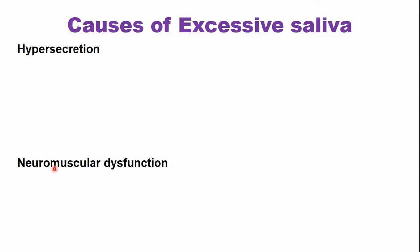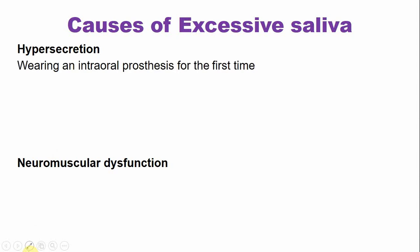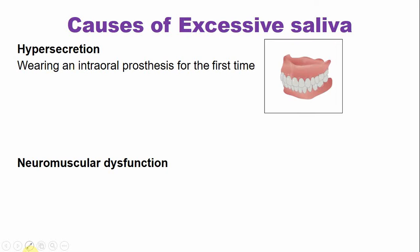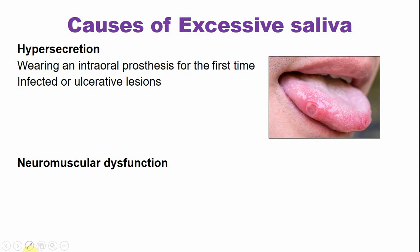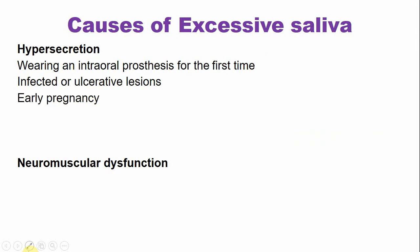In hypersecretion, the causes include: when the patient is wearing a new intraoral prosthesis — it acts as a foreign body initially and causes excessive saliva production, whether it is a complete denture, partial denture, or an orthodontic appliance. Infected or ulcerated lesions also cause irritation, leading to more saliva production. During early pregnancy there is also hypersecretion.